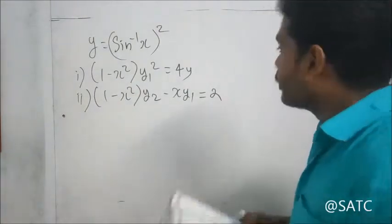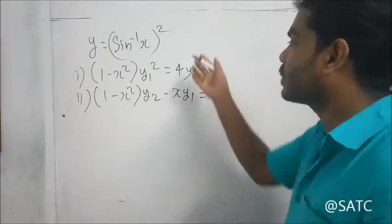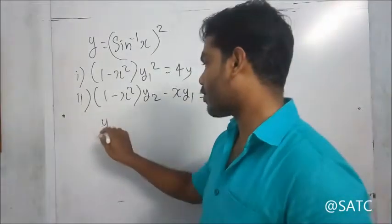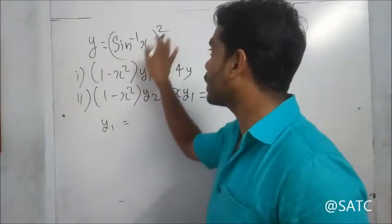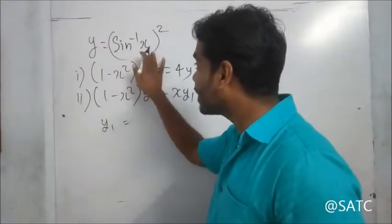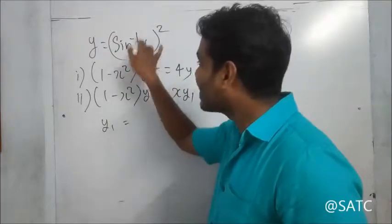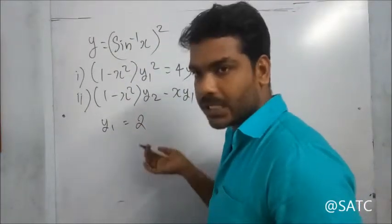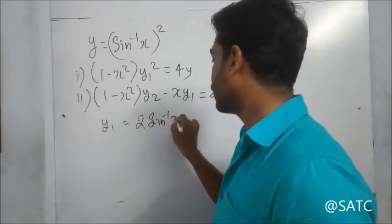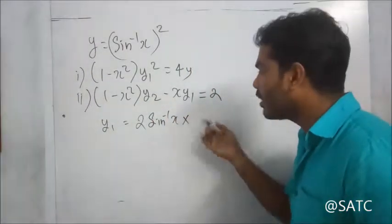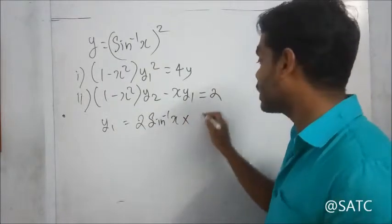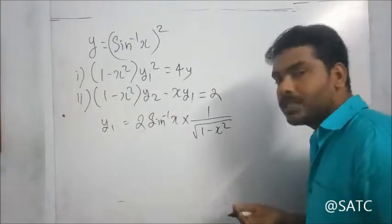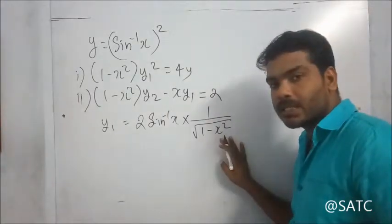Now we are going to find y1, the differentiation of (sin inverse x) whole square. The derivative of the whole square gives 2 times sin inverse x, and again the derivative of sin inverse x is 1 by root of (1 minus x square).